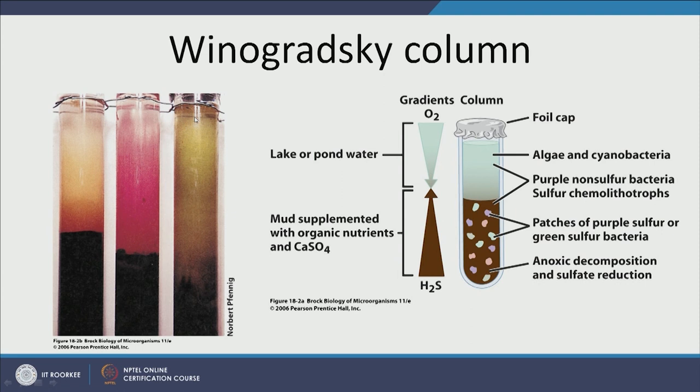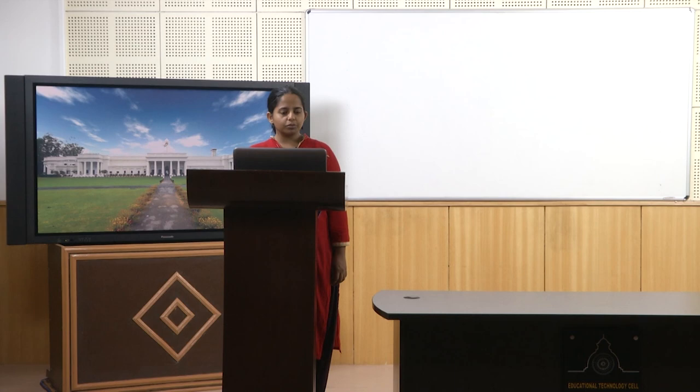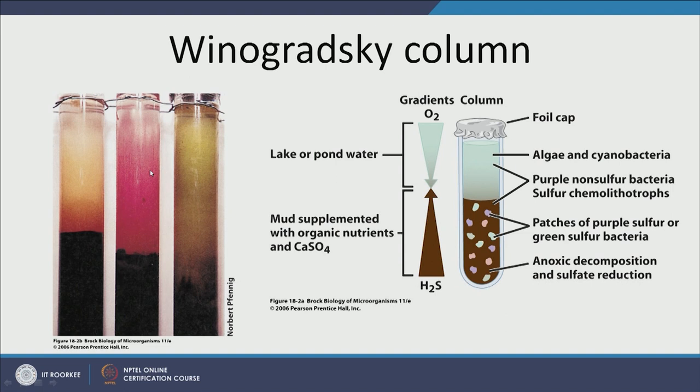At the top we have aerobic conditions, resembling the top of a lake — we have oxygen gradient, electron acceptor gradient, and light gradient, all resembled in these columns. Winogradsky used these columns to detect and isolate different kinds of bacteria such as purple non-sulfur bacteria, purple sulfur bacteria, and green sulfur bacteria. On the top you will find algae and cyanobacteria, then purple non-sulfur bacteria, then sulfur chemolithotrophs, then patches of purple or green sulfur bacteria, and at the bottom sulfate-reducing bacteria. So if you want sulfate-reducing bacteria, sample from the bottom; if you want algae, sample from the top.